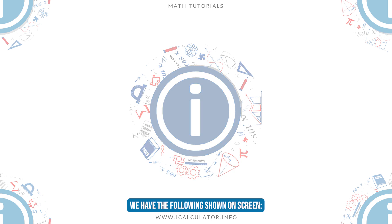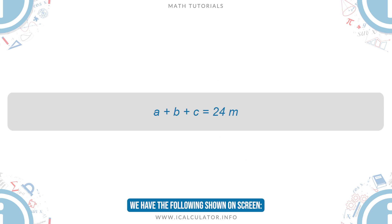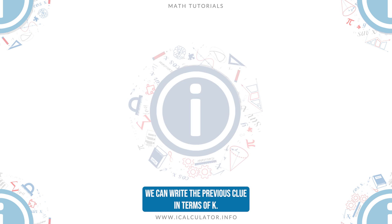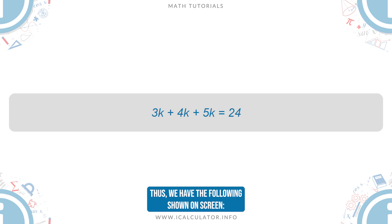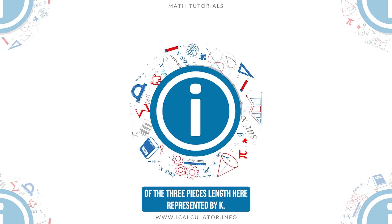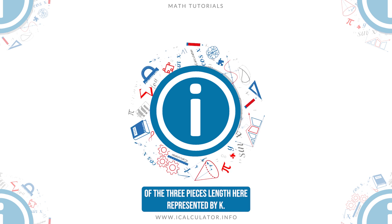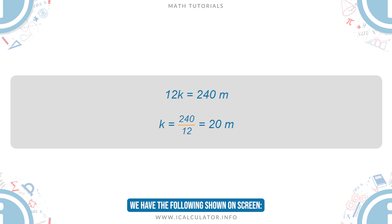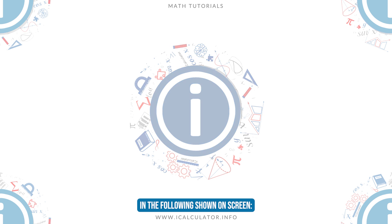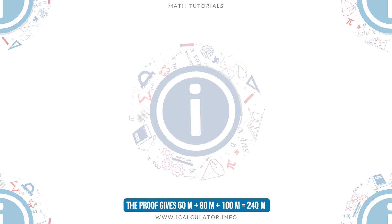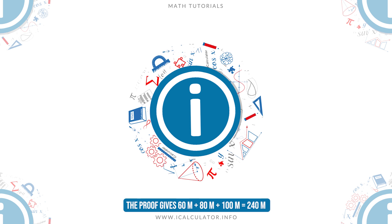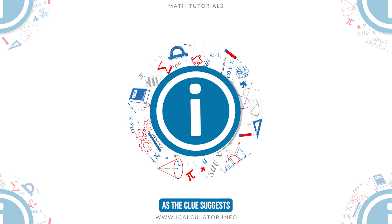In addition, we have the following shown on screen. We can write the previous clue in terms of K. Thus, we have the following shown on screen. This allows us to find the GCF of the three pieces' lengths, here represented by K. We have the following shown on screen. Therefore, we obtain for the length of each piece the following shown on screen. The proof gives 60 meters plus 80 meters plus 100 meters equals 240 meters, as the clue suggests.